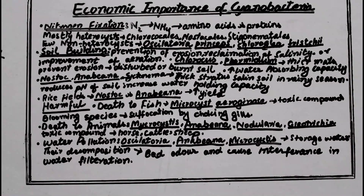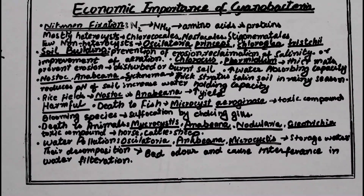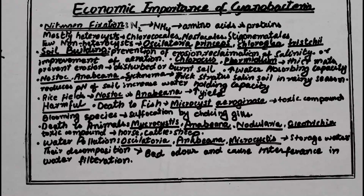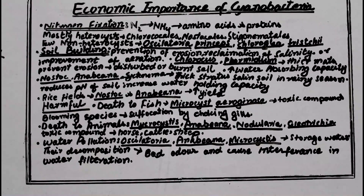The second harmful role is the death of animals. Species including Microcystis, Anabaena, Nostoc, Nodularia, and Gloeotrichia are harmful to animals. They produce toxic substances — if these species are present in the body of horses, cattle, or sheep, the toxic substances produced can easily kill those animals.